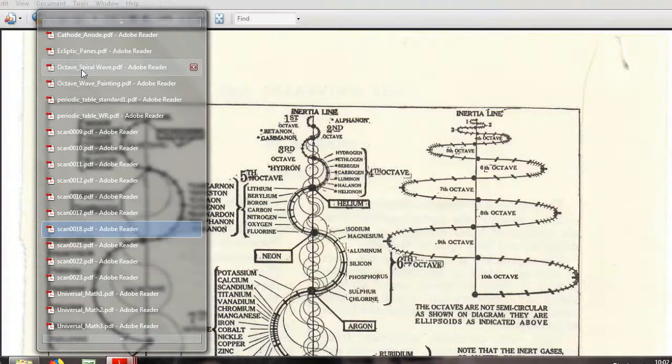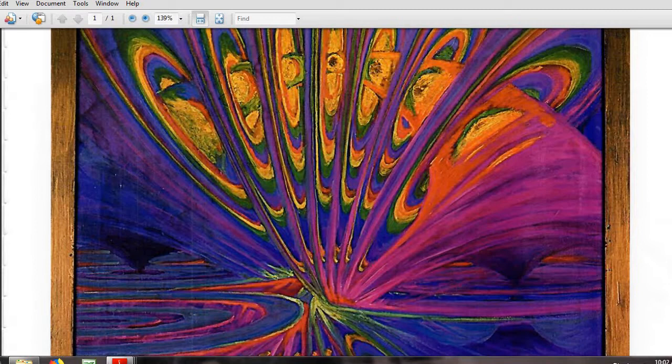This is the painting of the octave wave by Walter Russell. Energetically speaking, this is the way that it looked to him in his mind's eye. This is ultimately what we need to keep in mind as the visual for the way that the octave wave of the universe is working. The 10 octave cycle, this right here, is the octave wave.